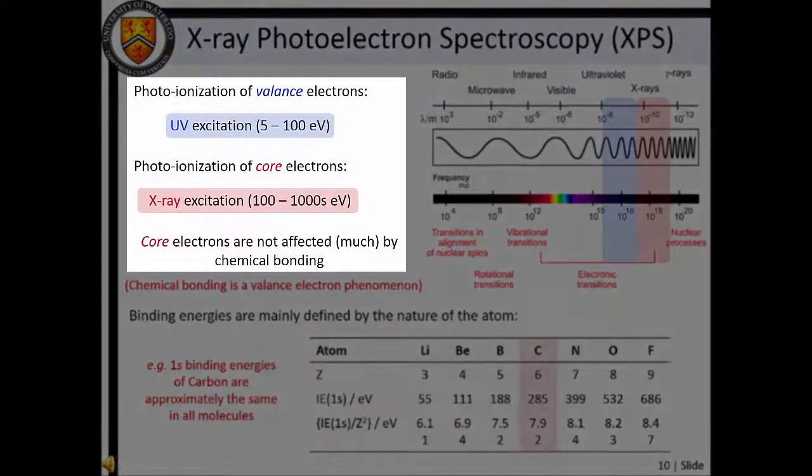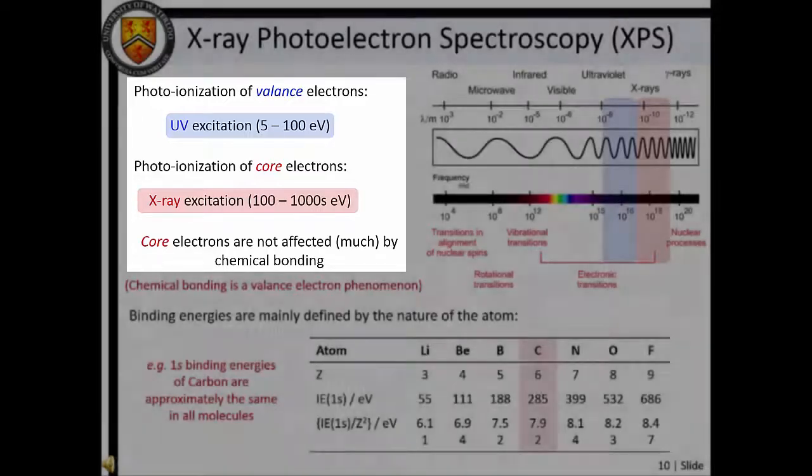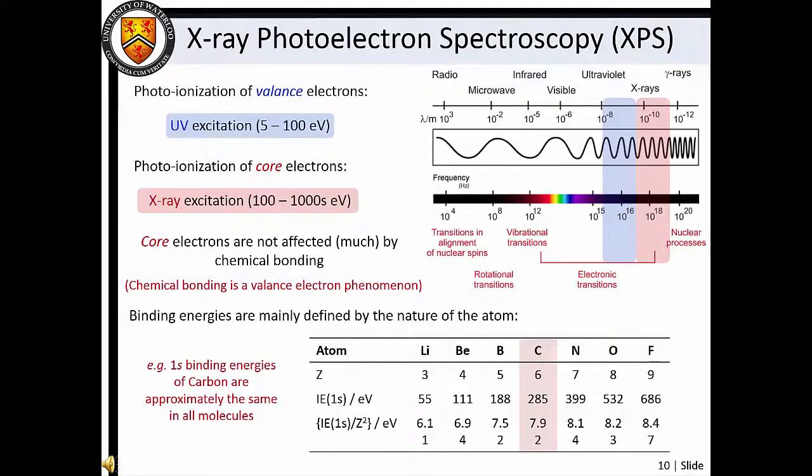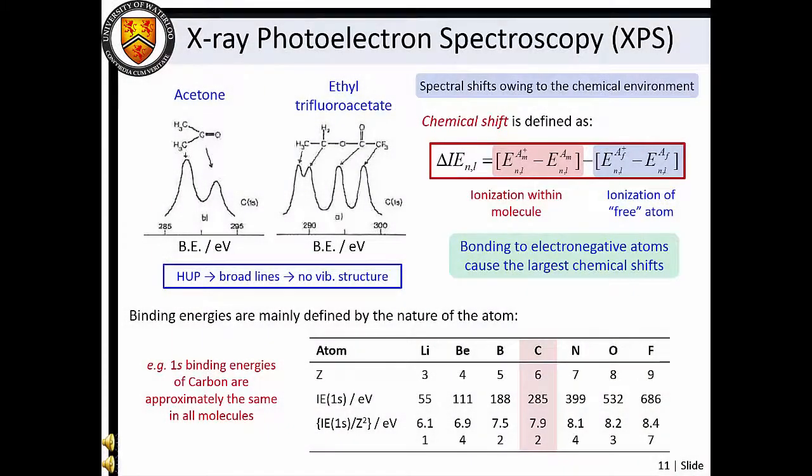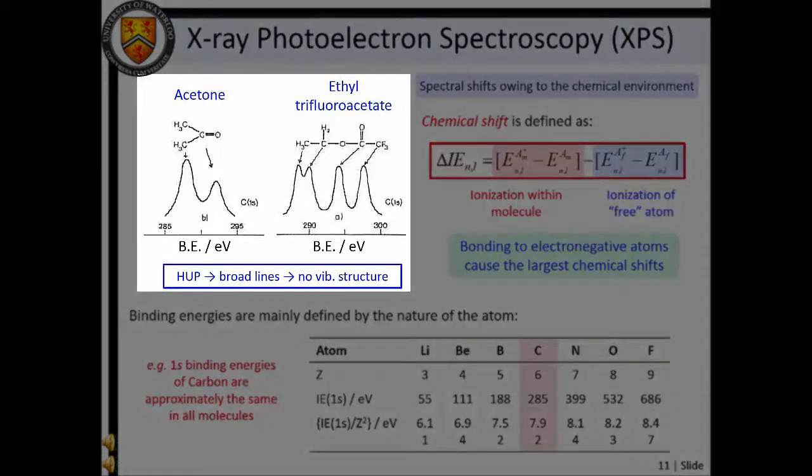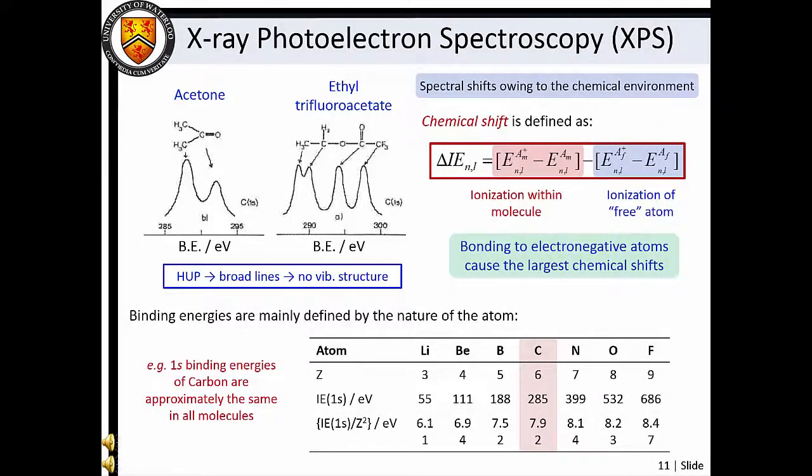Photoionization of valence electrons typically requires ultraviolet excitation. To remove core electrons, we require much higher energies and must instead photoionize with x-rays. Since chemical bonding is a valence electron phenomenon, binding energies of core electrons are predominantly defined by the nature of the atom. For example, the 1s binding energies for carbon atoms are approximately the same in all molecules. Differences between binding energies for atoms and molecules compared to that of the free unbound atom arise due to the chemical environments of the bound atoms. For example, the 1s binding energy of free atomic carbon is about 285 electron volts, whereas the 1s binding energy of the carbonyl carbon in acetone is approximately 292 electron volts. This chemical shift can be attributed to the fact that the carbonyl carbon is bound to an electronegative oxygen atom. The oxygen atom draws electron density away from the carbonyl carbon, thereby increasing the effective nuclear charge experienced by the 1s electron.